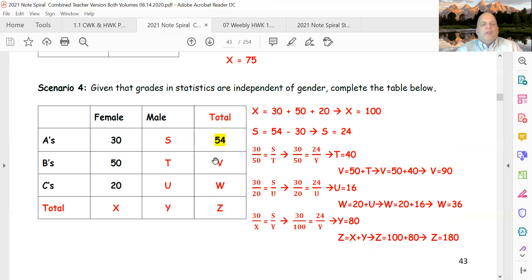30 over 50 equals 54 over V. I know this is 24. 30 over 50 equals 24 over T, and I can just keep going through all of them until I'm done.